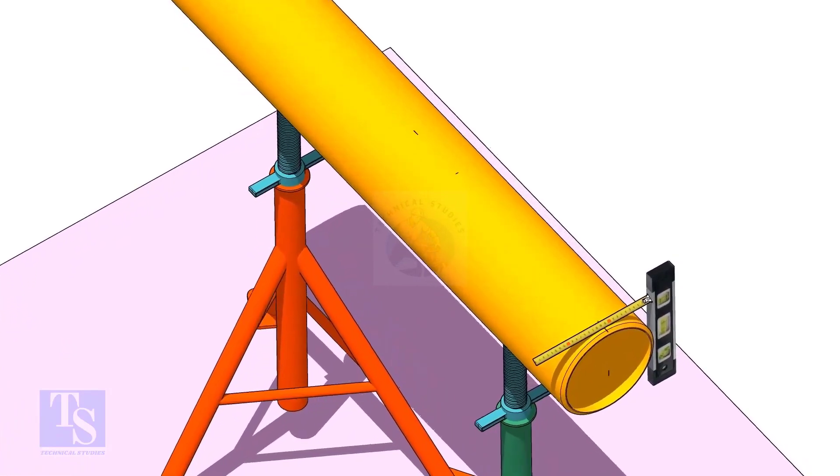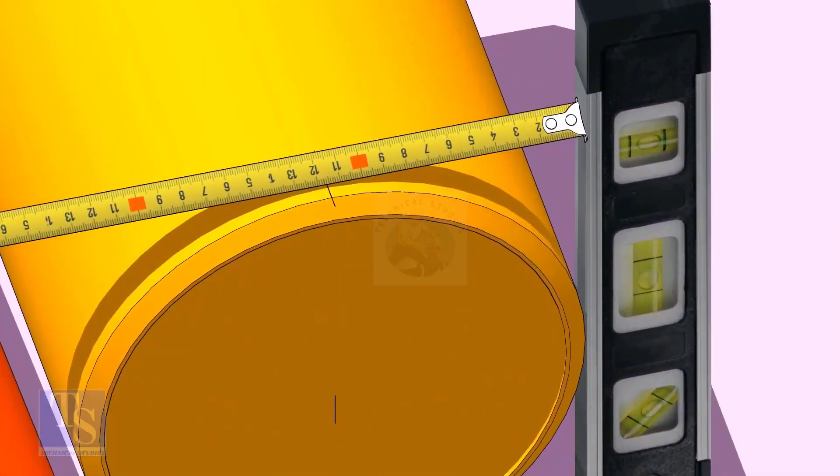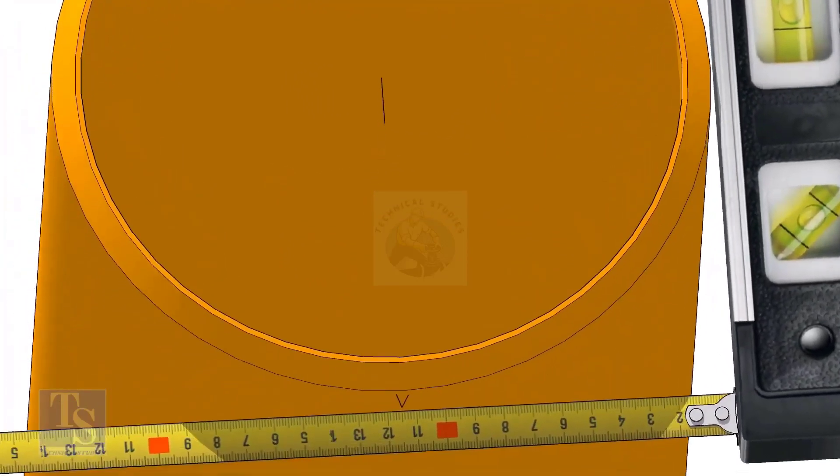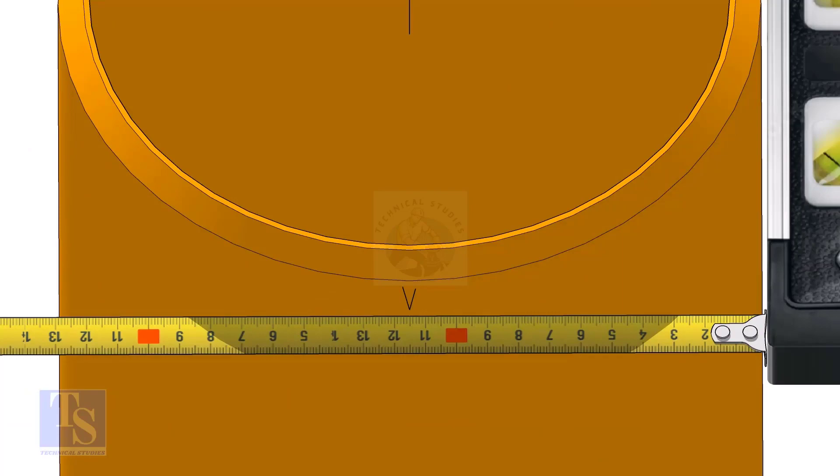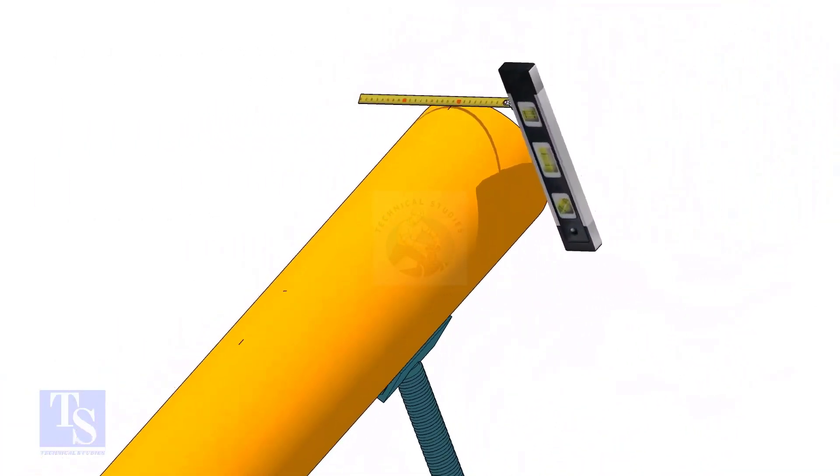Mark the center line of the header on the top and the bottom. Hold a level bottle firmly and vertical at the side of the pipe as shown, mark half OD at the top and the bottom side of the pipe. Cross check the dimension from the opposite side to ensure the marking is correct.